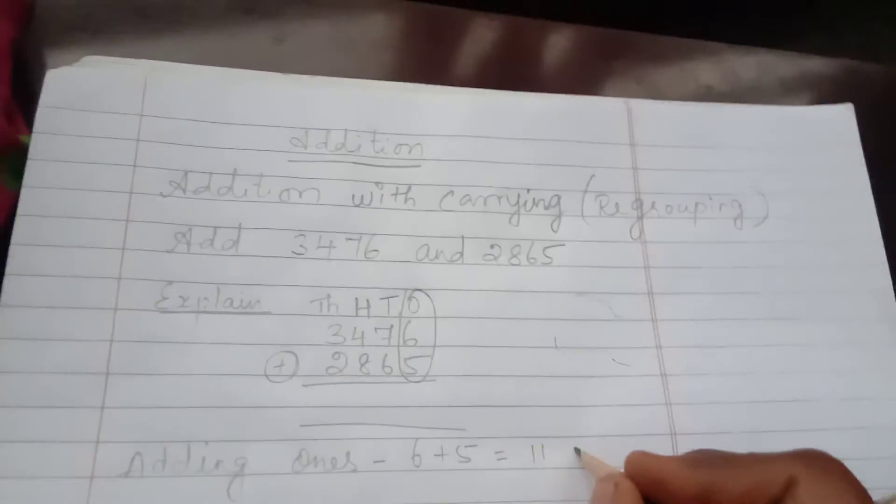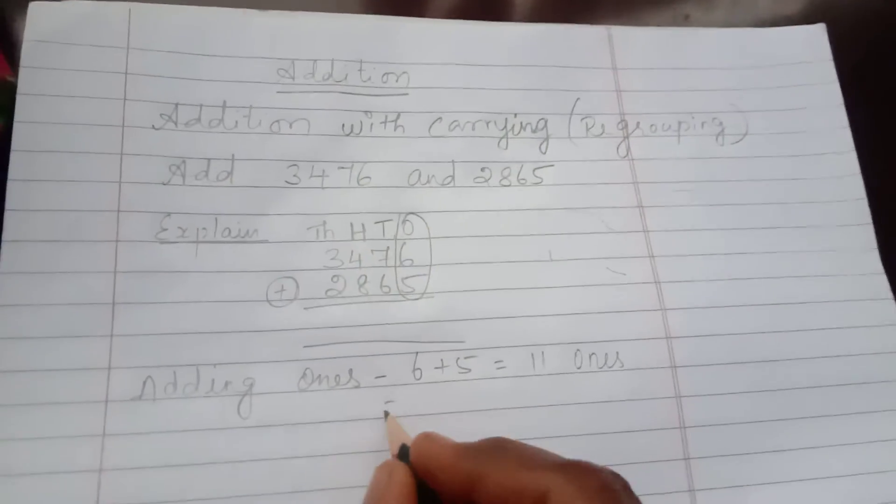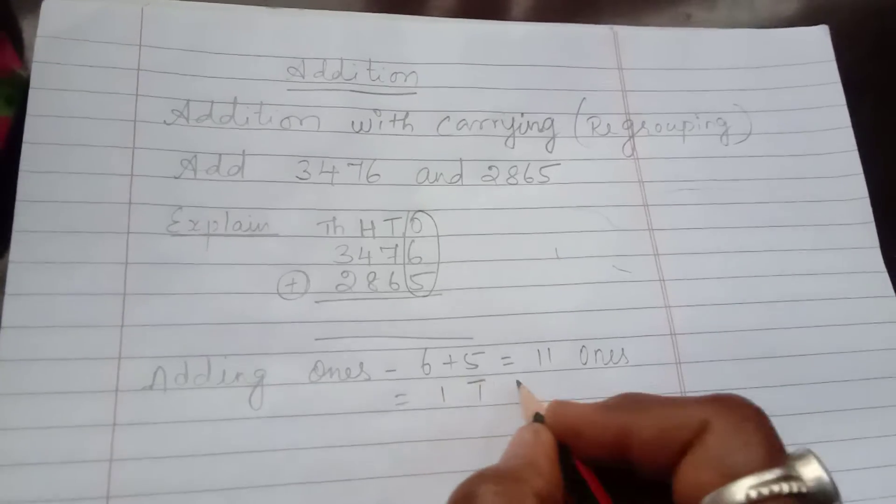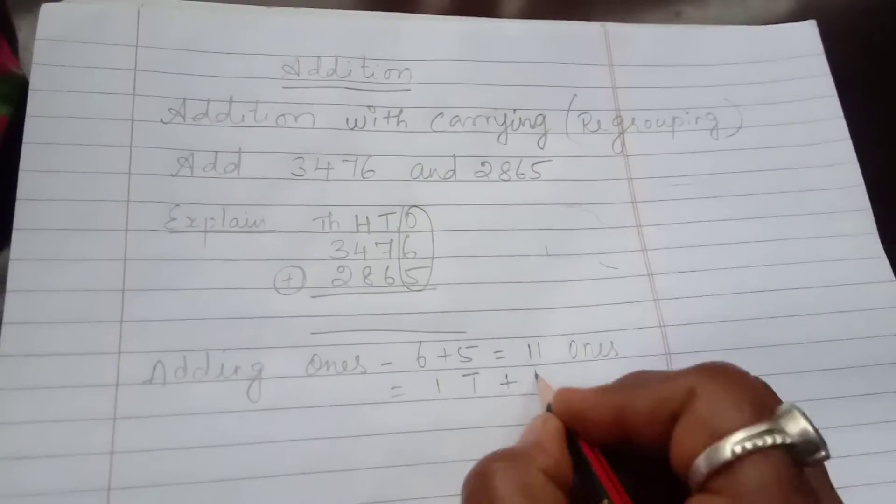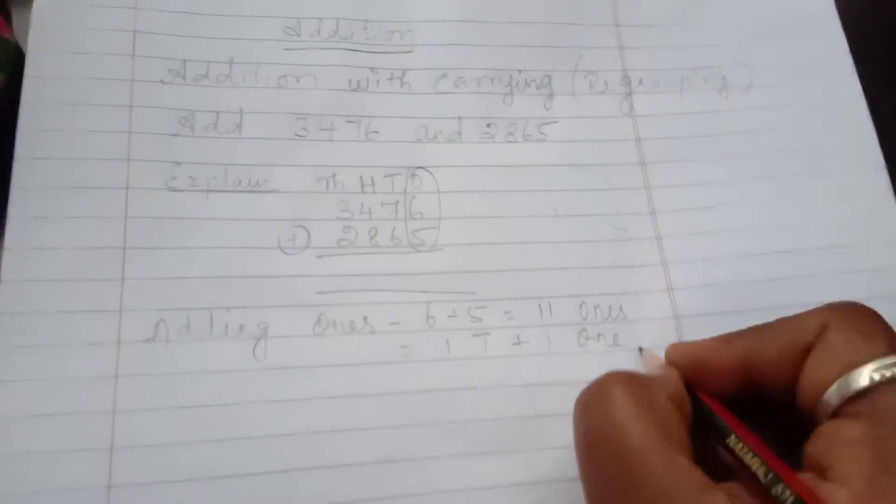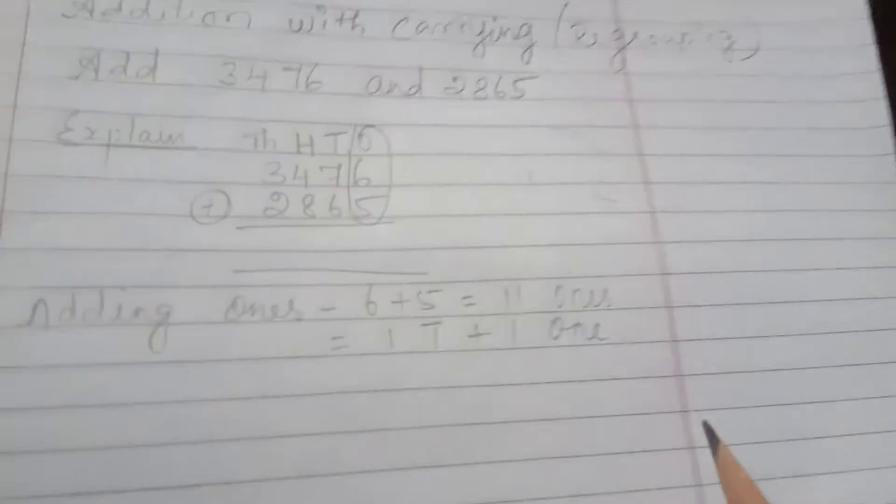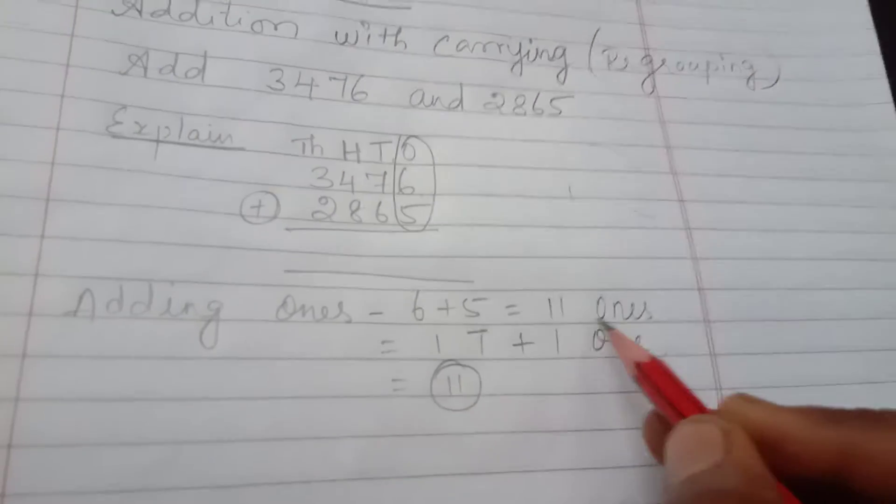So I am going to write it as ones and tens. 1 in ones, so we got 11 ones. For 11 ones I am going to explain it easily.